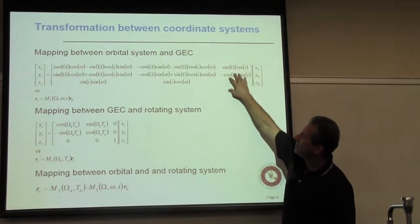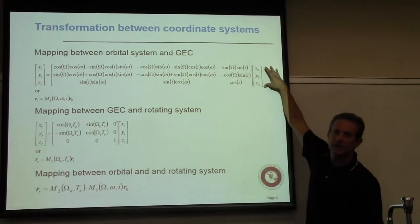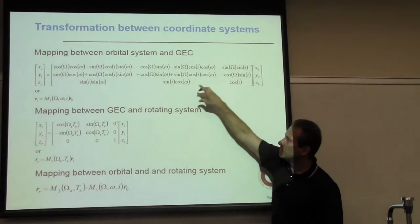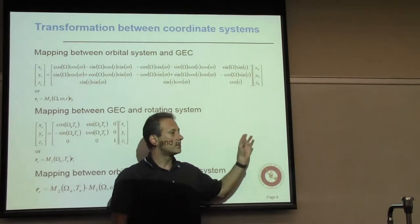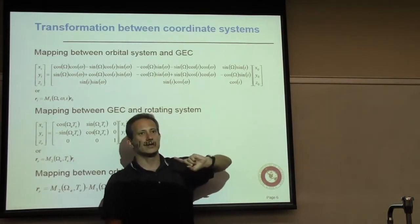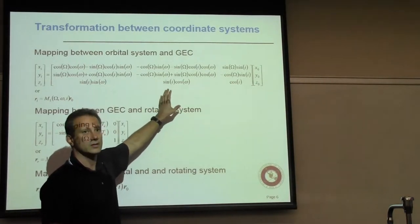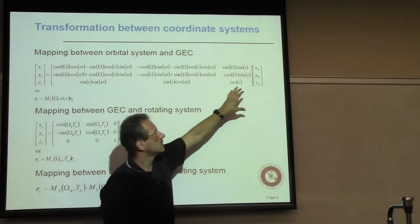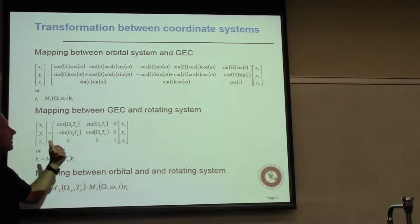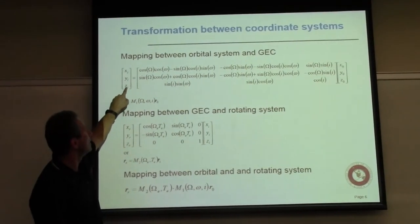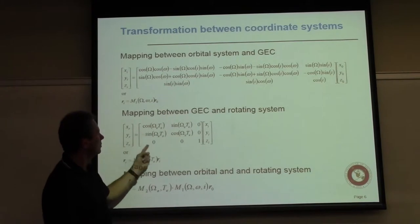The complete mapping goes from the orbital system to the rotating system using the product M2 * M1. This is not commutative — you must do M1 first, then M2. The only unknown is the angle omega_E * t_E. Omega_E, the angular velocity of the Earth, is 72 micro-radians per second. What you need to determine is how much time has elapsed since the two coordinate systems were aligned. The Earth's rotation period is 23 hours, 56 minutes, and 4.09 seconds — not exactly 24 hours.